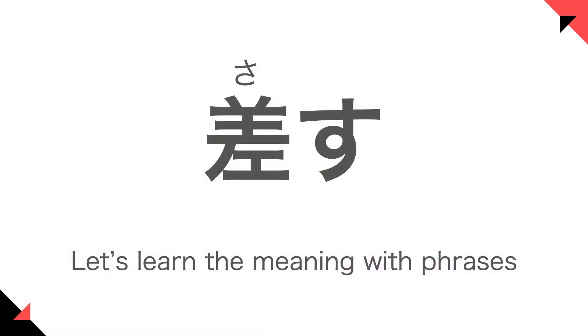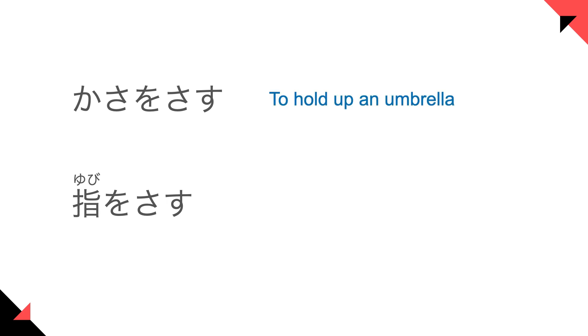Today's main vocabulary is SASU, and it can have many meanings. Let's learn the meanings with phrases together. These are the two popular meanings. The first one might be the most popular: KASA-O SASU, that means to hold up an umbrella.